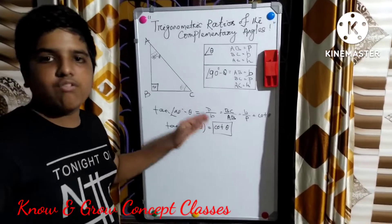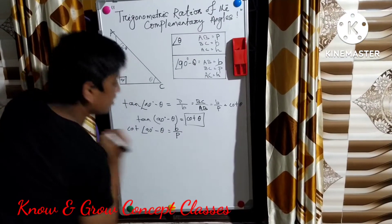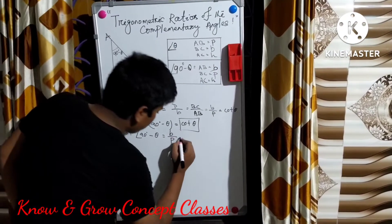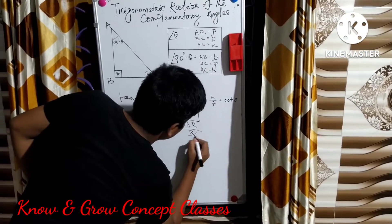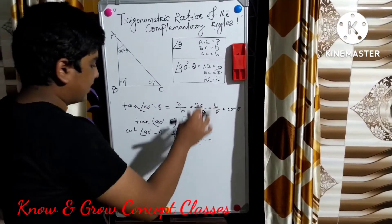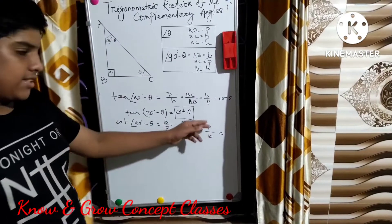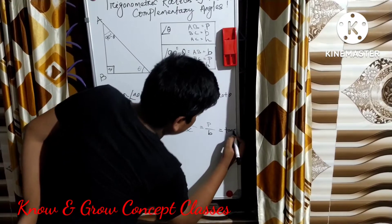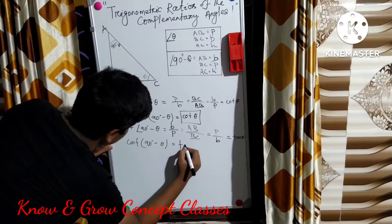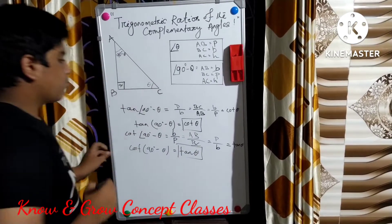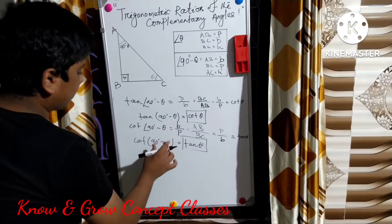Now let us find the ratio of cot(90° - θ). Cot(90° - θ) is equal to base by perpendicular. Here the base is AB and the perpendicular is BC. Comparing with angle theta, AB is the perpendicular and BC is the base, which is the ratio of tan θ. So we can write cot(90° - θ) = tan θ.